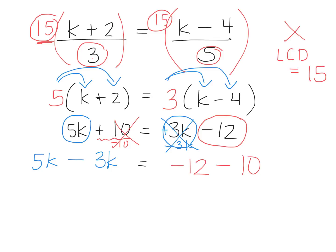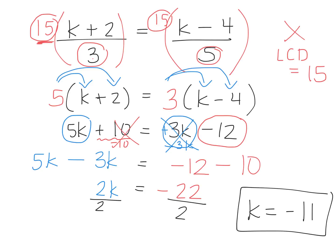We've grouped all our like terms together. Final step — simplify. What's 5k take away 3k? That gives 2k. What's negative 12 take away 10? Negative 22. So divide both sides: k equals negative 11.